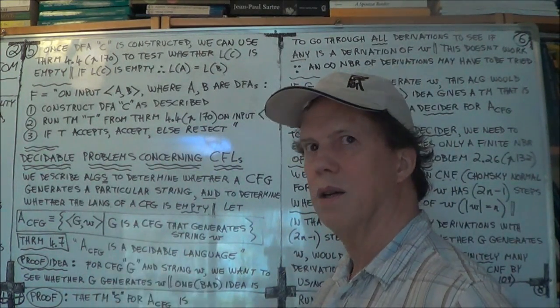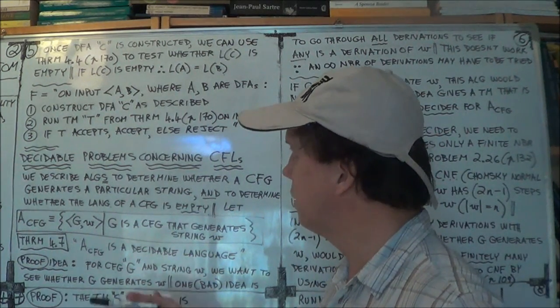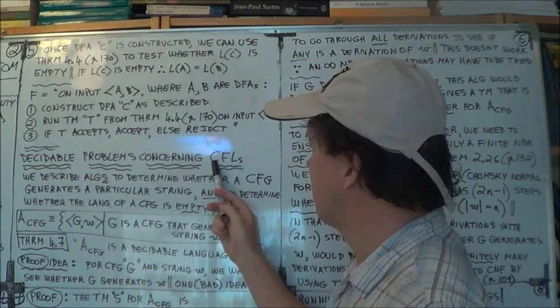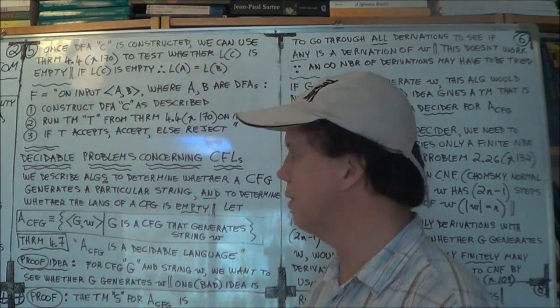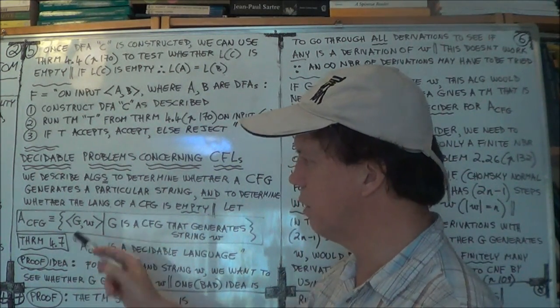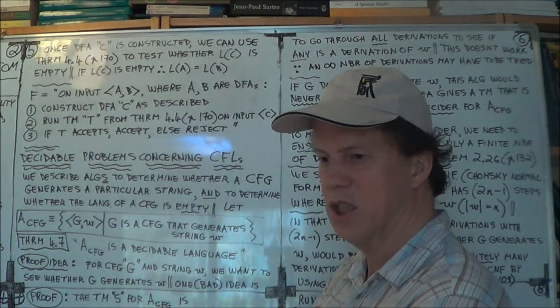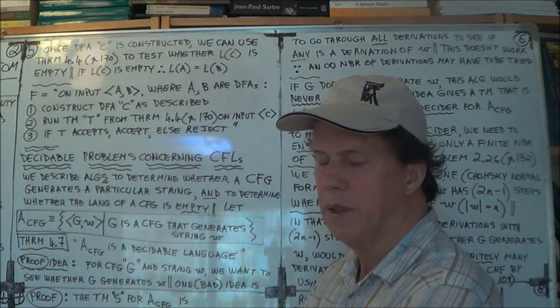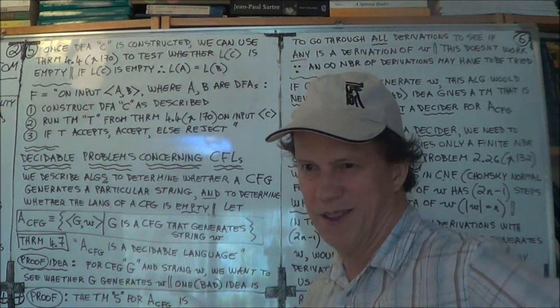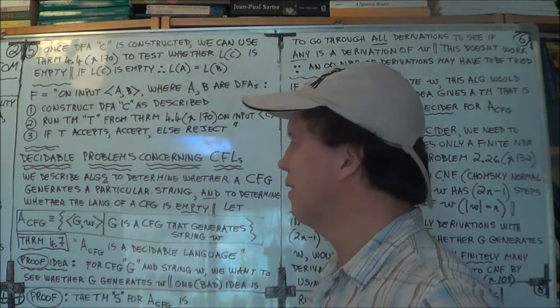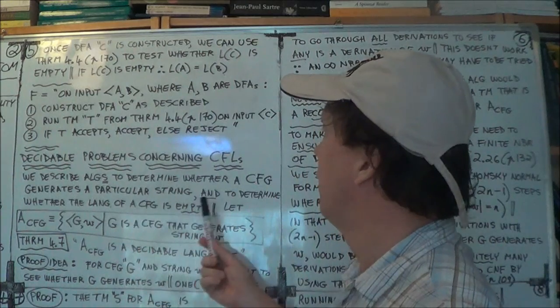So now we're going to talk about problems, computational-type problems about context-free languages. So we're going to do much the same kind of thing as we did before. Before we were dealing with regular languages. Now we're going to ask similar questions about context-free languages. But we'll keep using that same trick of converting a computational problem into a belongs-to-a-language type problem.